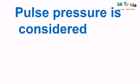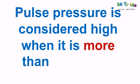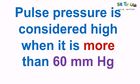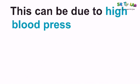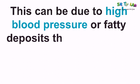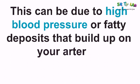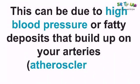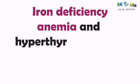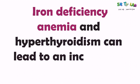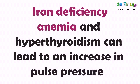Pulse pressure is considered high when it is more than 60 mmHg. High pulse pressure can be due to high blood pressure or fat deposits that build up on your arteries — what we call atherosclerosis. Apart from high blood pressure and atherosclerosis, iron deficiency anemia and hyperthyroidism can also lead to an increase in pulse pressure.